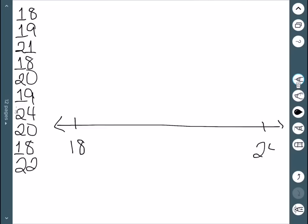So we just need to fill in this. So we have 18, 19, 20, 21, 22, and then 23 and 24. And then we use dots to indicate different data points. Our first one was 18, 19, 21.